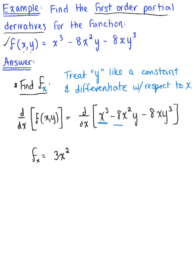The next term we encounter is -8x²y. Keep in mind, we are treating y as if it's a constant — we treat y the same way we treat 8: leave it alone. So the derivative of x² is 2x, giving us -8 times 2x, or -16xy.